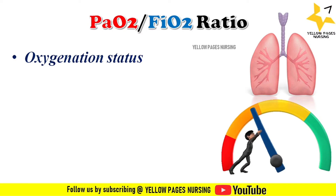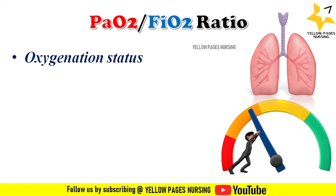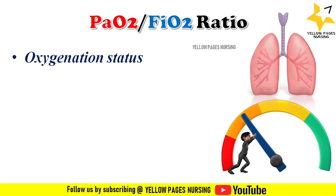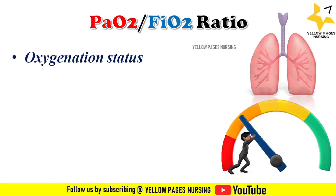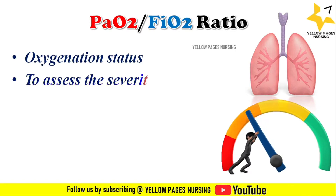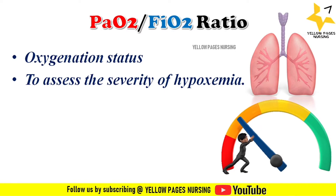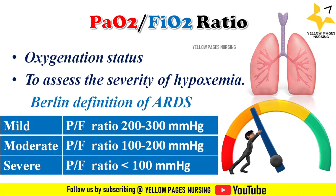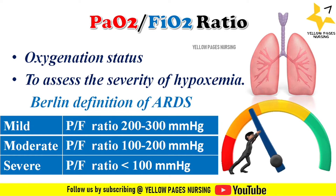What are the uses of PF ratio? Oxygenation status is easily evaluated by calculating PF ratio. Moreover, PF ratio is a good indicator of how much oxygen the patient is breathing (FiO2) and how much is moving into circulation (PaO2). It also helps to assess the severity of hypoxemia.